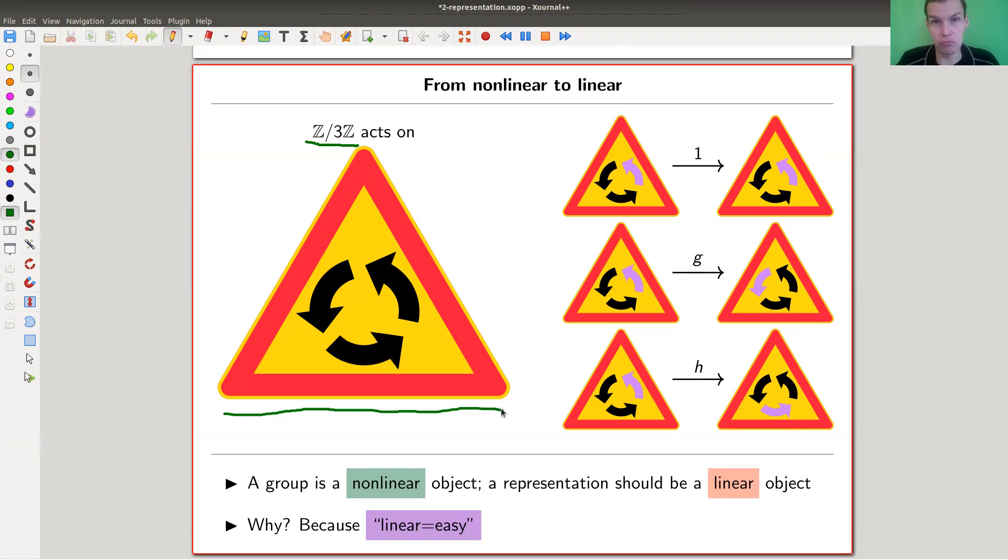So how does it look like? Well you rotate the picture and the symmetry of an object is when I rotate the picture you can't tell the difference. Mathematically speaking, you can identify if you want symmetries with actions. So this Z mod 3 acts here.